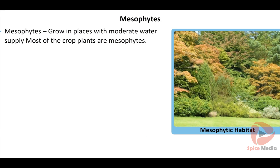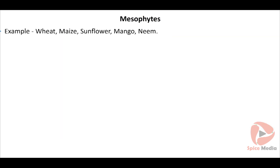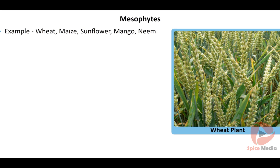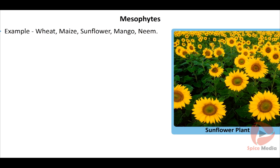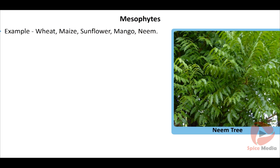Mesophytic plants grow in places with moderate water supply, as they neither grow in places with too much water nor in places with too little water. Most of the crop plants are mesophytes, e.g. wheat, maize, sunflower, mango, neem.